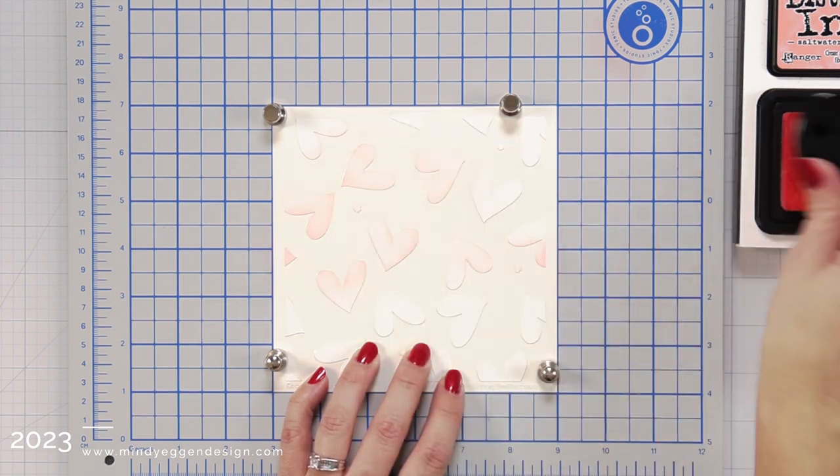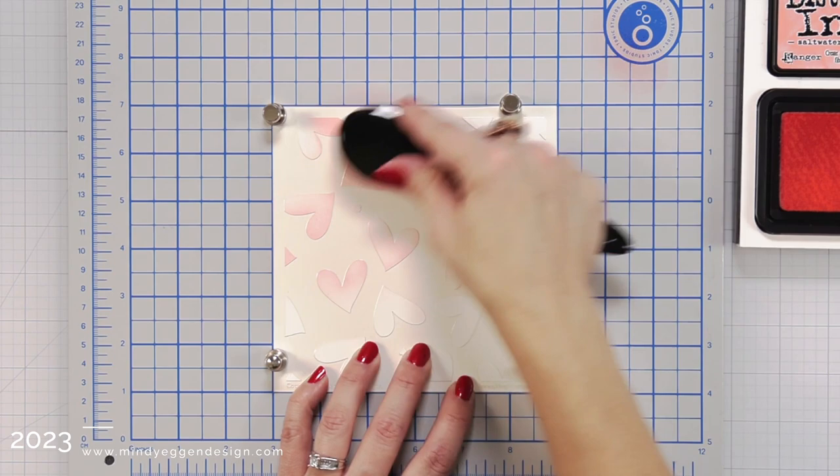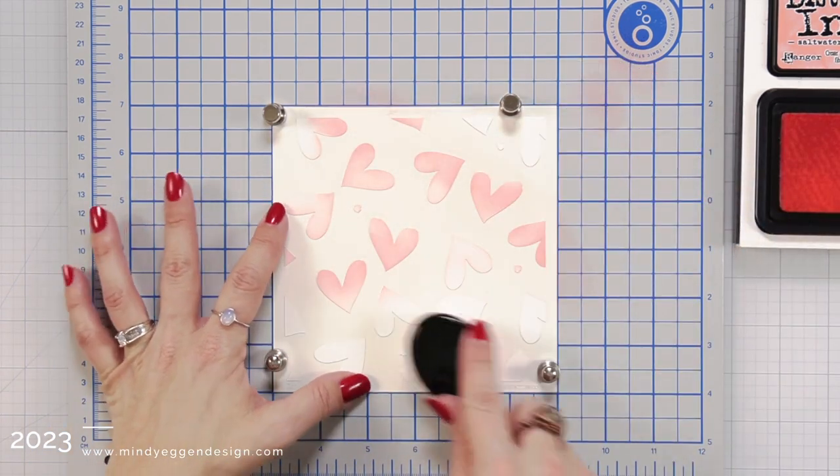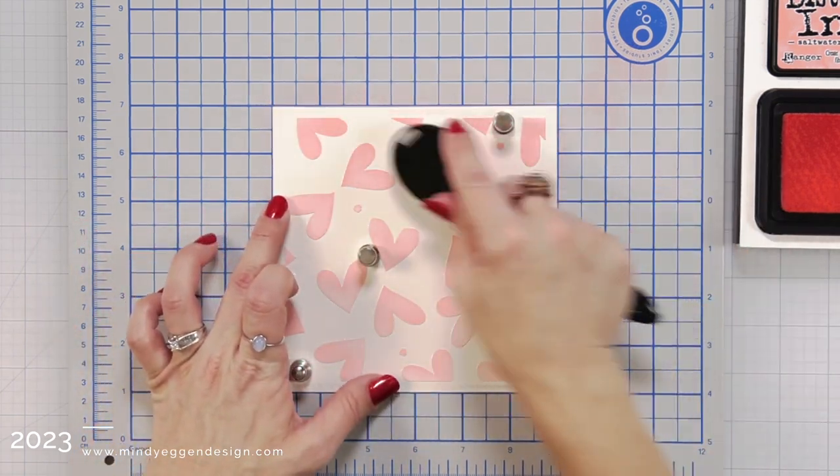One of the reasons that I grabbed the distress inks is because I know that they are very vibrant in color. So here I'm just going with that light layer of ink, blending back and forth to make sure I'm getting good coverage of those hearts in the stencil.